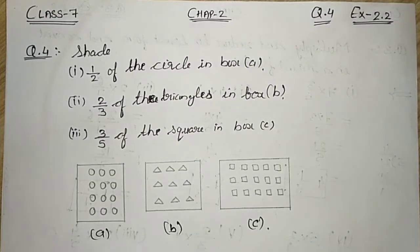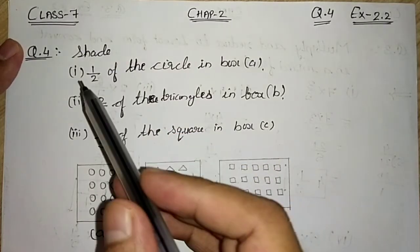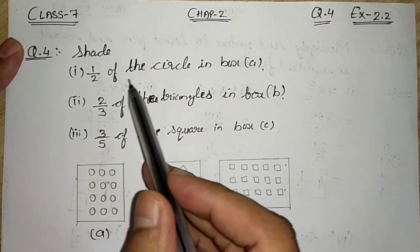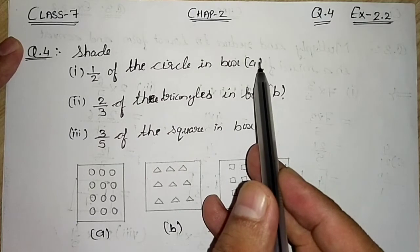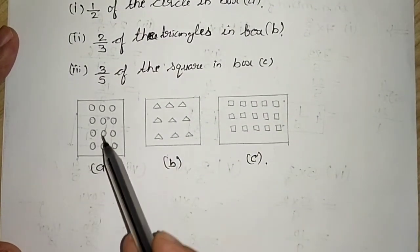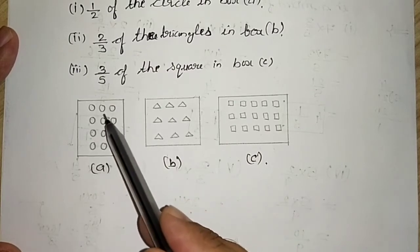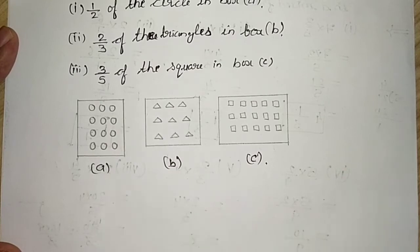Hello students, welcome again. Today we are going to solve question number 4 of exercise 2.2. The question says shade first half of the circles in box A. Box A is given to you over here. There are circles in that box A, you have to shade half of the circles which is in box A.